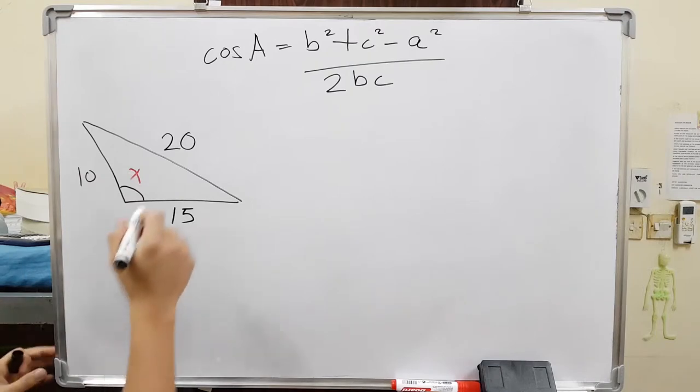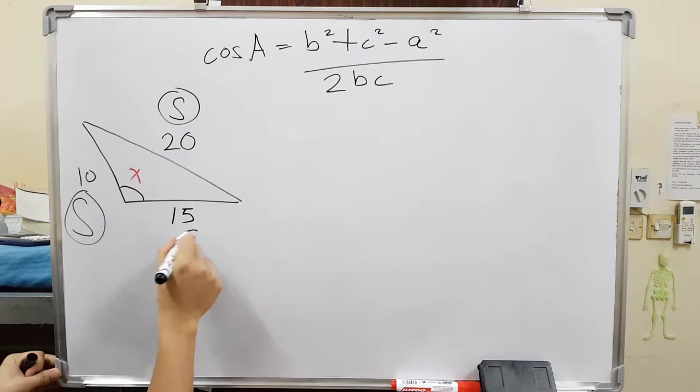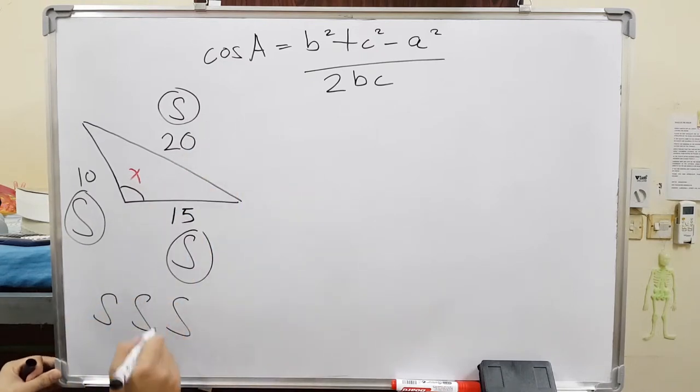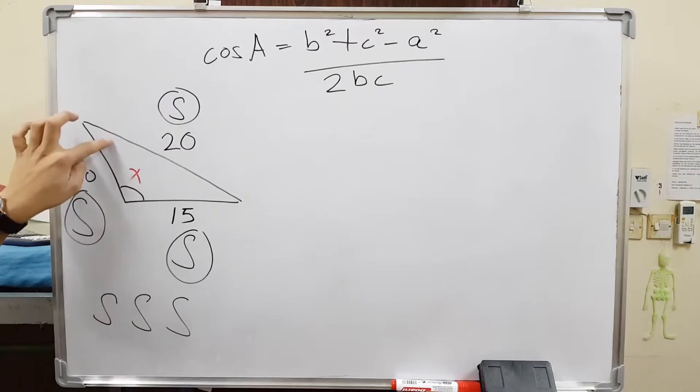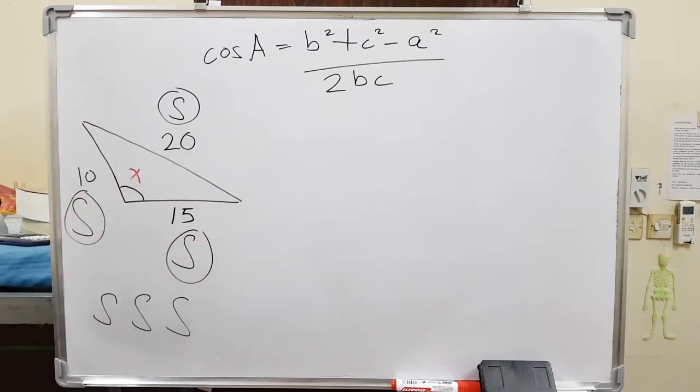You will only use cosine rule when you have side, side, and side. So basically, all the given information are sides or SSS. And we need to look for an angle. This is when you should use a cosine rule. If there are other information here, for example, there's an angle in here. It's better guys if you use sine rule because that will be easier.